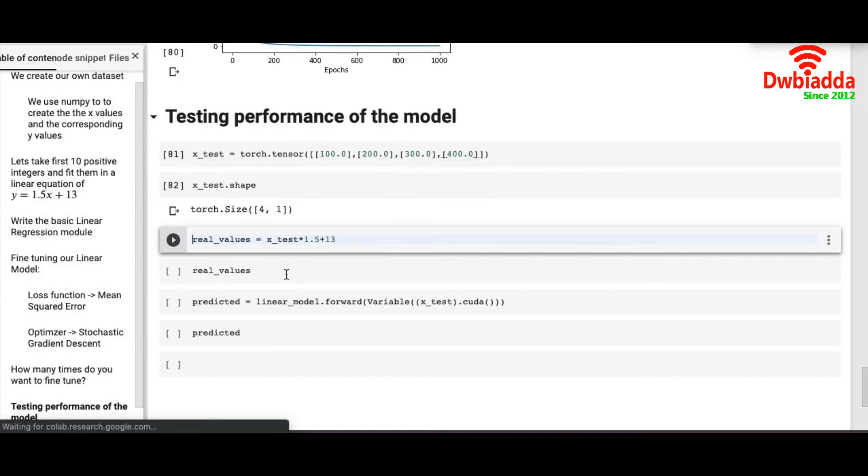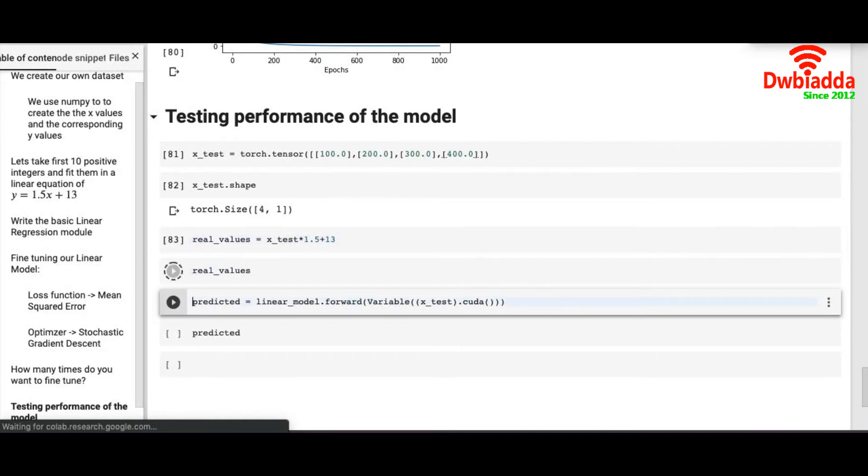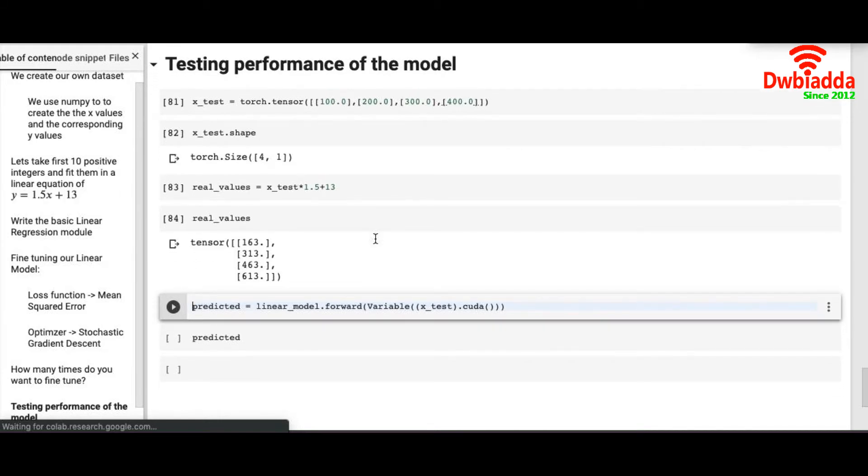To check the real values we insert directly in the equation, that is 1.5 into x plus 13, and we will have our real values. So the real values are: for 100 it's 163, for 200 it's 313, for 300 it's 463, for 400 it's 613.